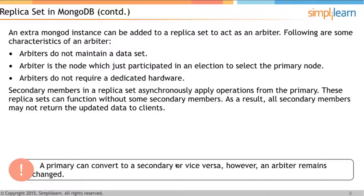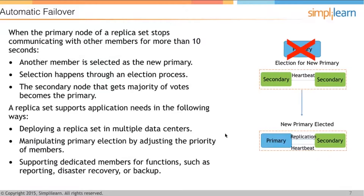A primary can convert to a secondary or vice versa; however, an arbiter remains unchanged. Automatic failover: when the primary node of a replica set stops communicating with other members for more than 10 seconds, another member is selected as the new primary through an election process. The secondary node that gets the majority of votes becomes the new primary.